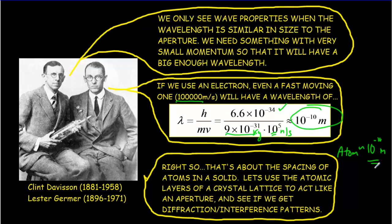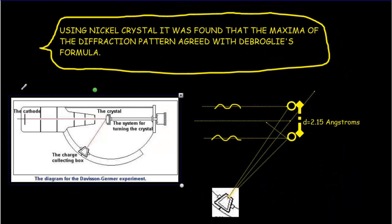Their idea is to send electrons onto a crystal, because the atoms are separated by about 10 to the minus 10 meters, forming a kind of diffraction grating. They should be able to get a diffraction pattern — places where electrons show up, then intensity really drops, then comes back up again. They used a nickel crystal, accelerated electrons through a voltage, fired them at the crystal, and had a detector that would register the number of electrons as the angle is changed.